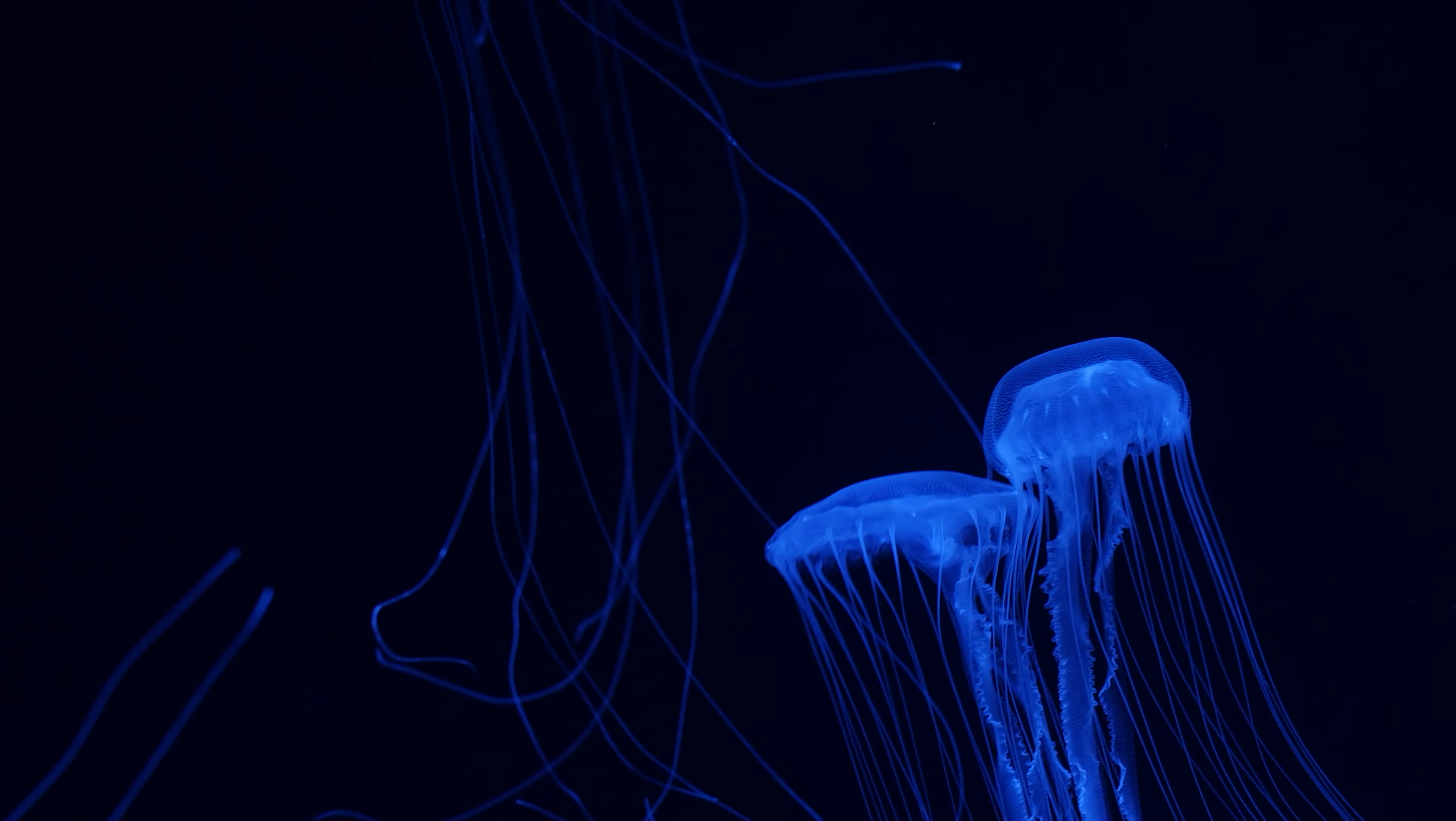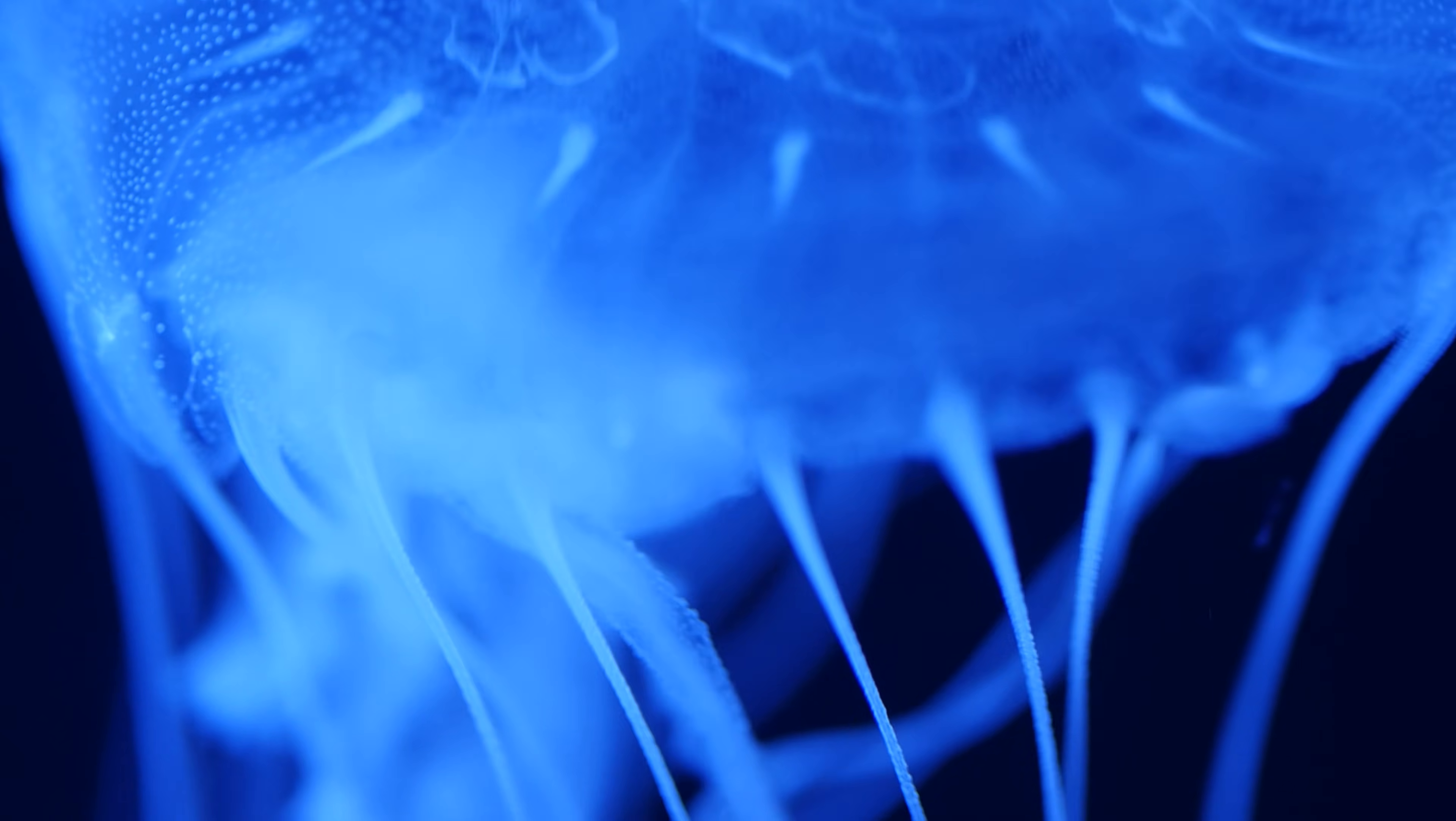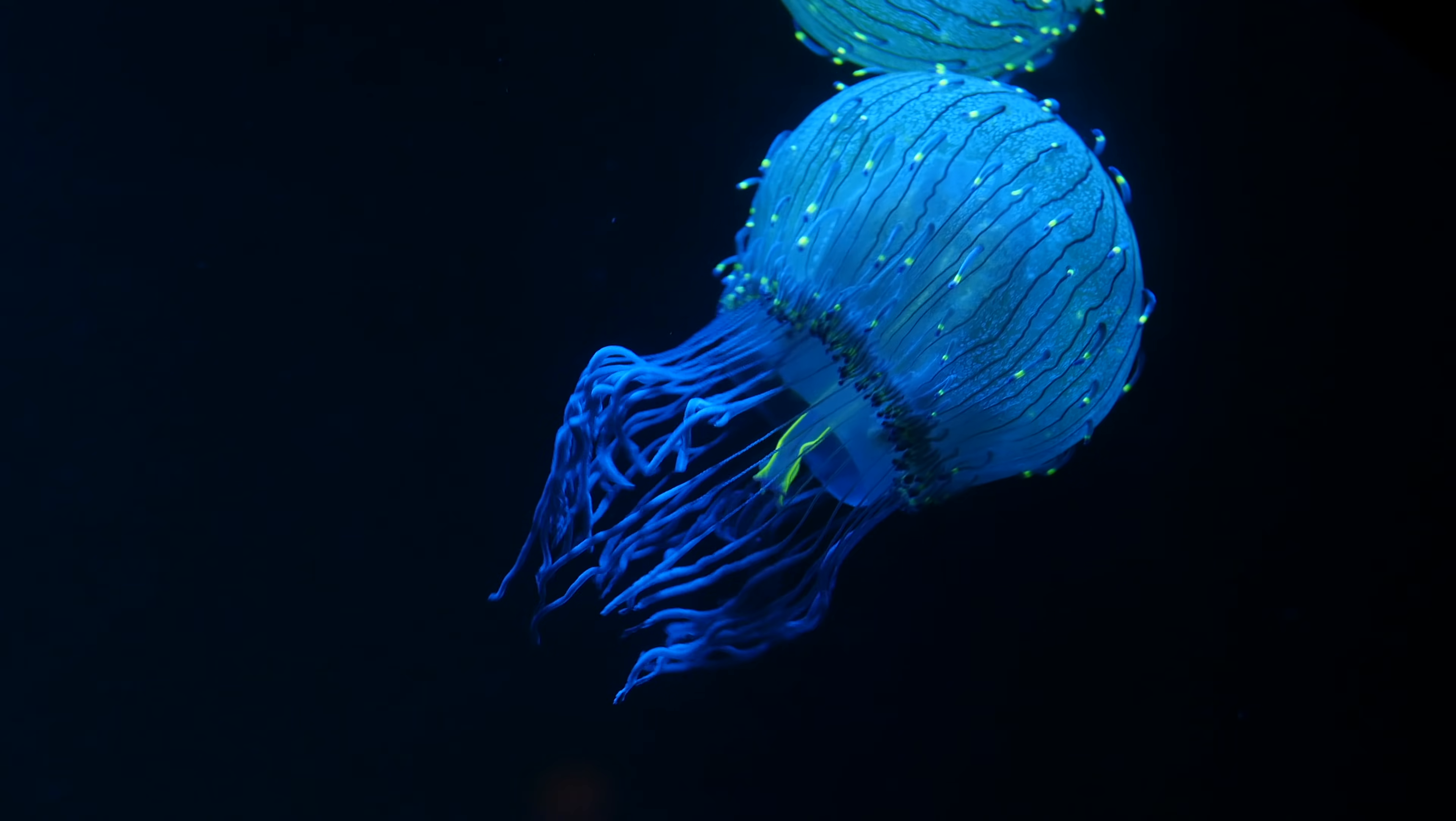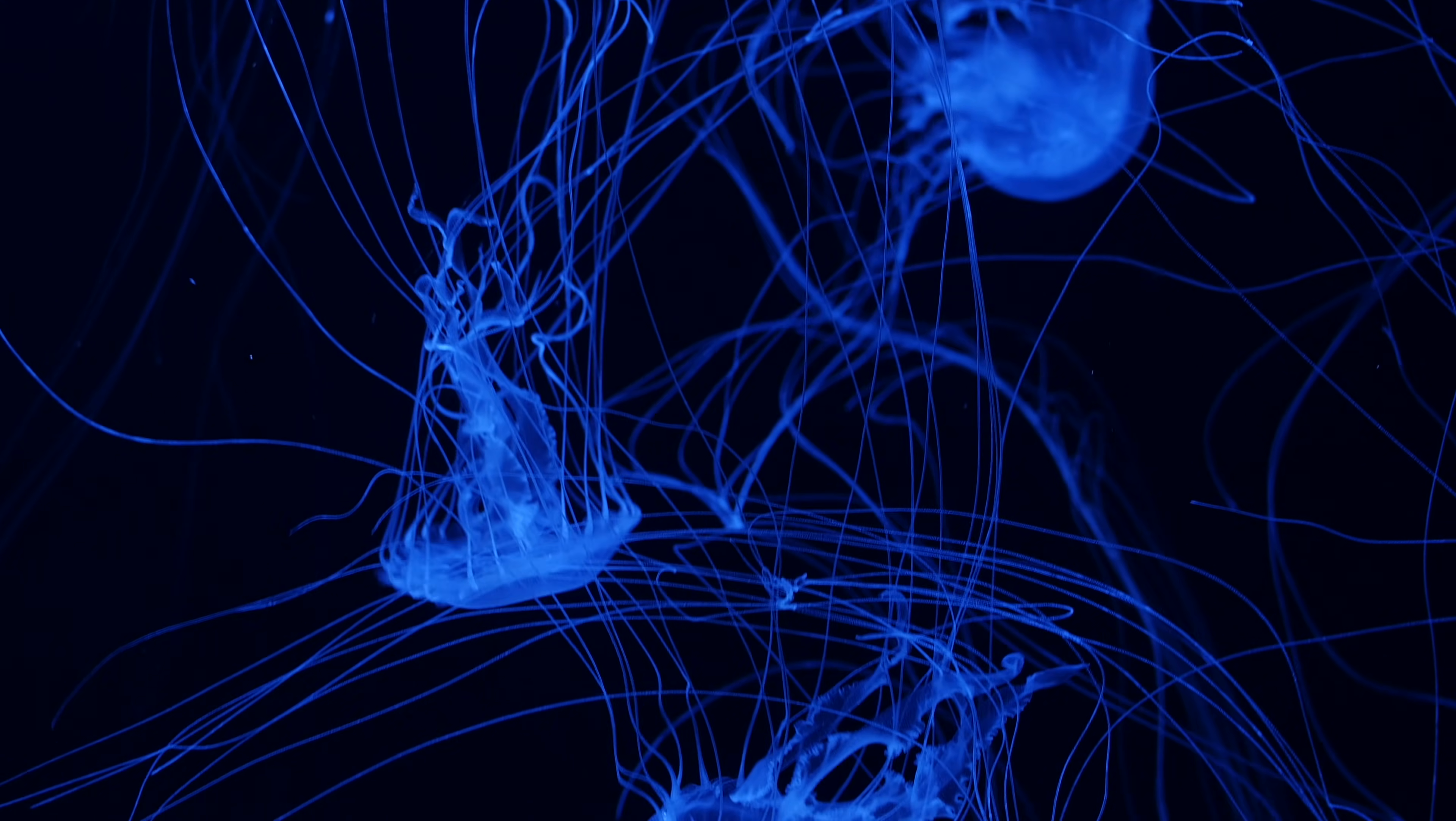At first glance, jellies seem like incredibly simple animals. They don't have a heart, or blood, or even a brain. They don't make decisions or work together. They can't see or hear. Basically, they just drift.